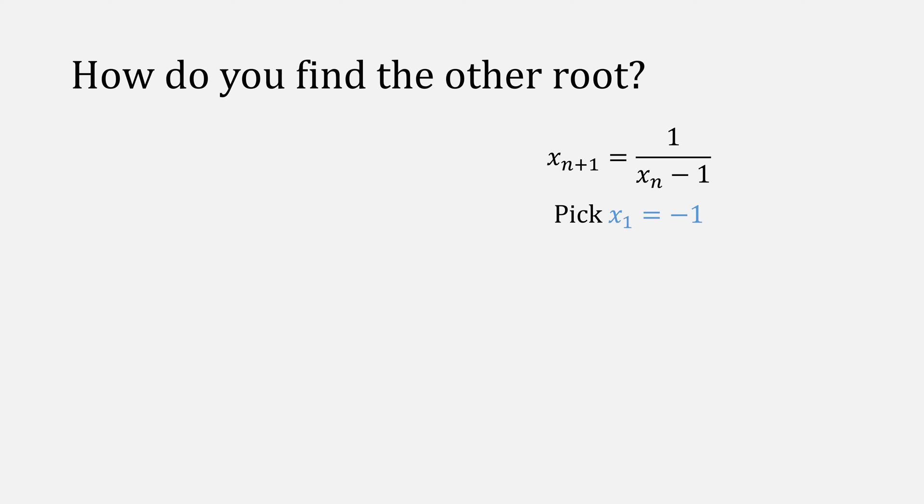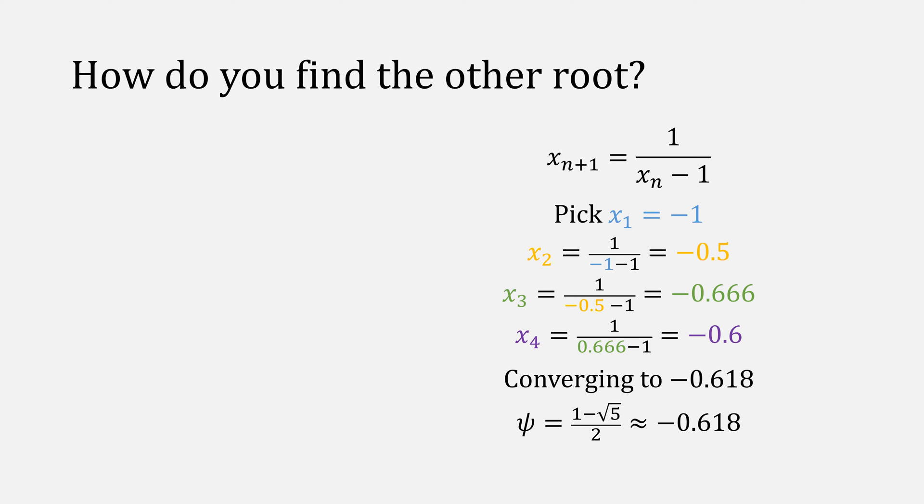If we instead start at the point minus 1 and do fixed point iteration, this eventually converges to our second root, 1 minus the square root of 5 over 2.